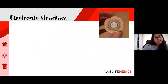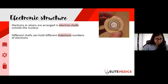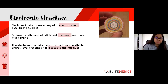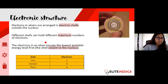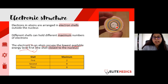Now we're going to look at the structure of electrons. Electrons within the atom are arranged in shells outside the nucleus. Depending on the atom and element, different shells can hold different maximum numbers of electrons. There's a rule in chemistry: electrons in an atom occupy the lowest available energy level first.